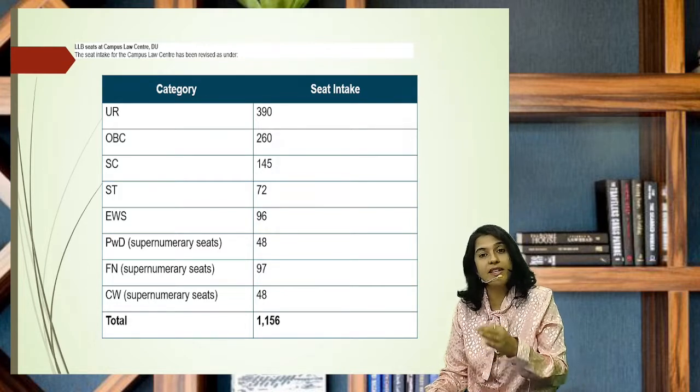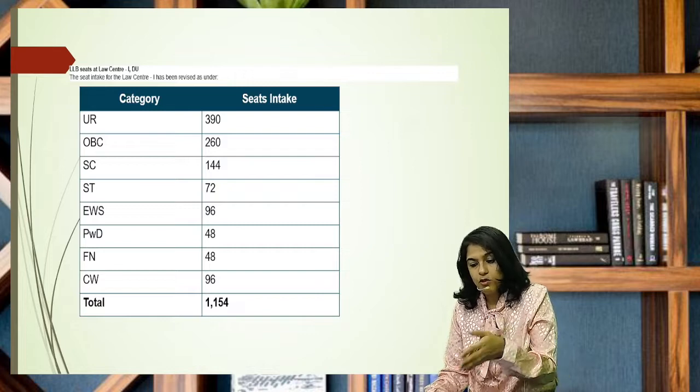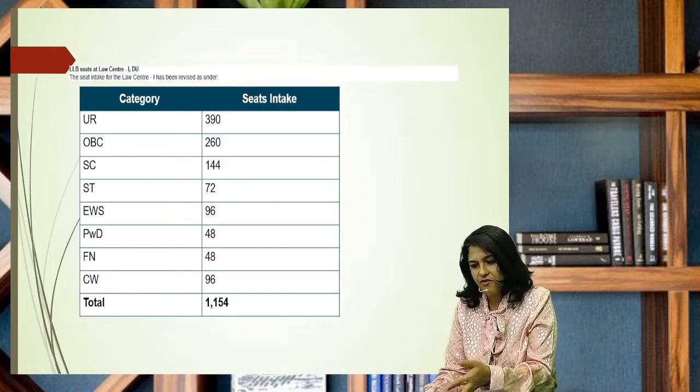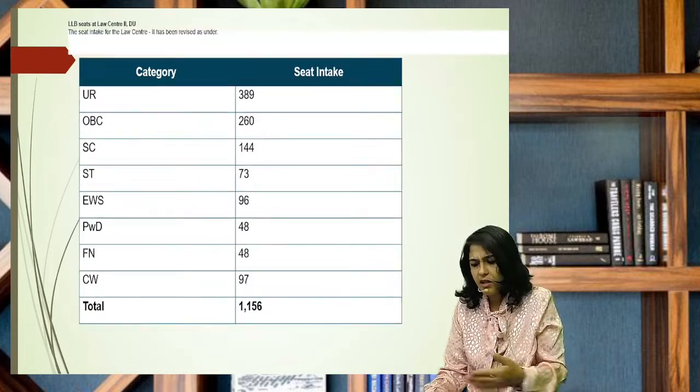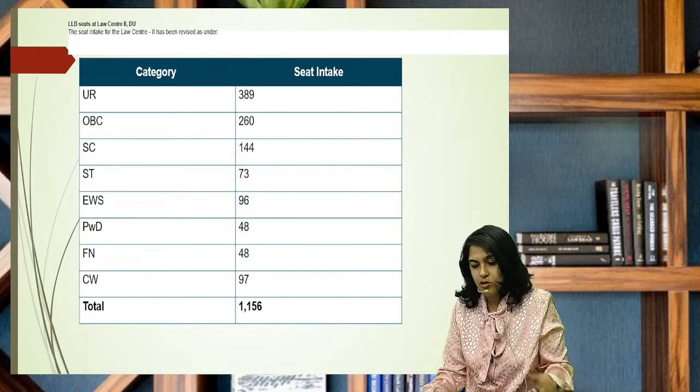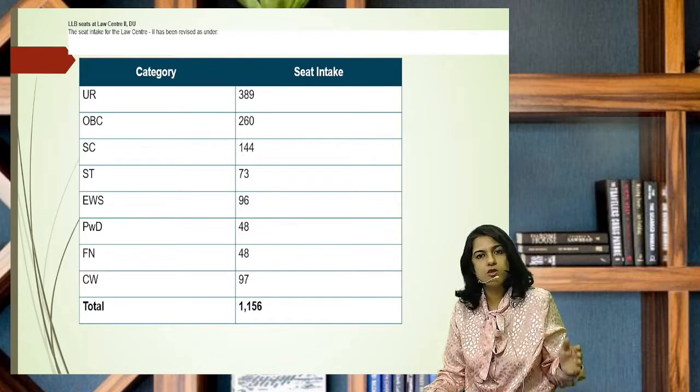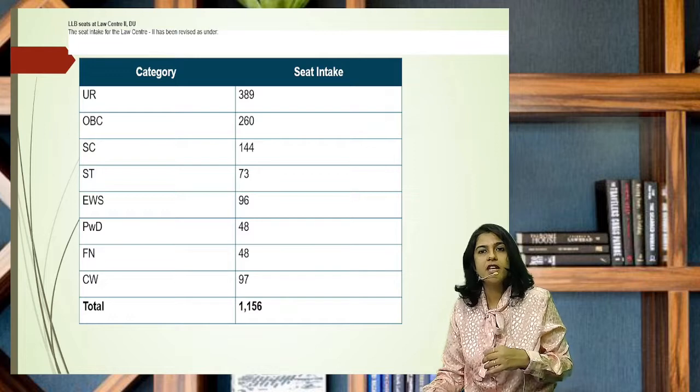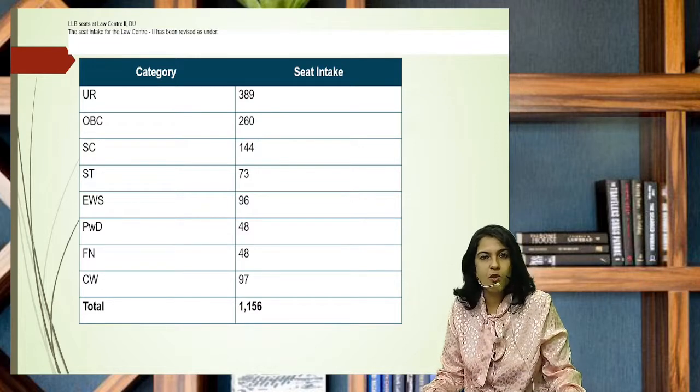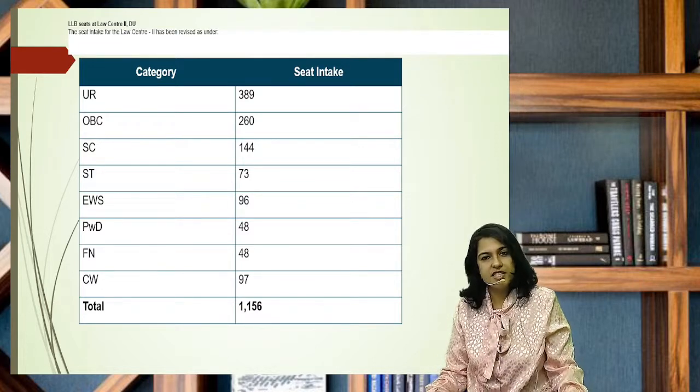This is Campus Law Center. If you go to Law Center One, again 1154, very similar to Campus Law Center's 1156. So across all three centers you have very similar number of seats.